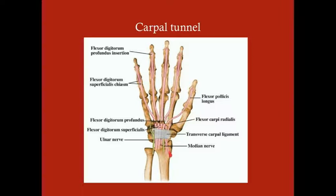What is the carpal tunnel? In order to be a tunnel it needs to be a three-dimensional space with a floor, walls, and a ceiling. The bones provide the walls and floor, but we need a ceiling — and that is formed by the transverse carpal ligament, also known as the flexor retinaculum. It extends roughly from the hook of the hamate to the trapezium.